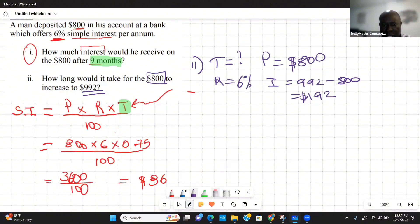To find the time, we can simply use this formula that says the time is equal to 100 times I over the principal times the rate. This is going to be 100 times 192, and we're going to put this over 800 times 6.